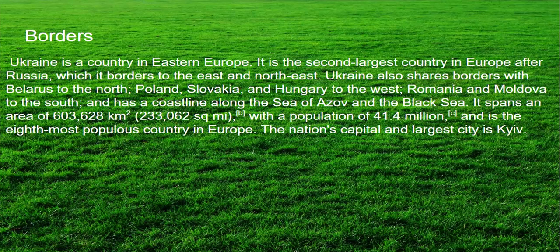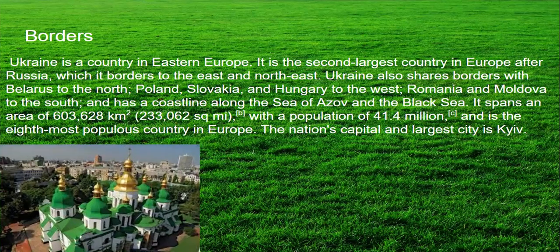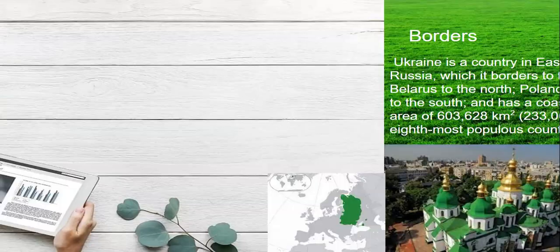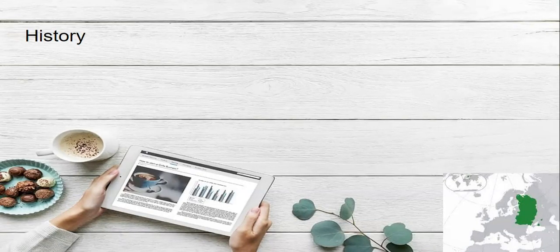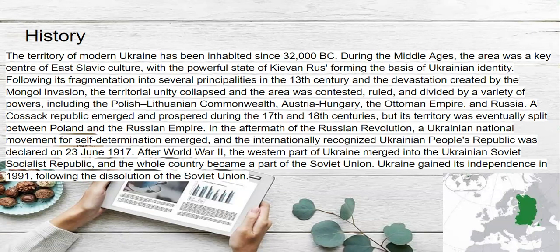Ukraine has a population of 41 million people. Its population has been declining since the fall of the Soviet Union, and it is the eighth most populous country in Europe. The nation's capital and largest city is Kyiv. Here we have a very beautiful Orthodox Ukrainian church.